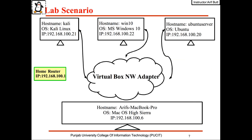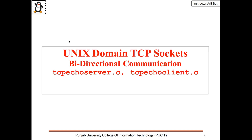This slide shows the lab setup, which is the same as discussed in previous sessions. Since we are going to work on Unix domain sockets which are local to a machine, I will be working only on one machine — Kali Linux. Let us move to the Kali terminal and see a sample code for an echo server and echo client that use a stream or TCP socket for bidirectional communication.